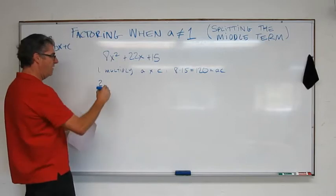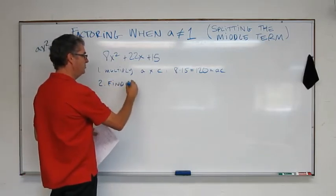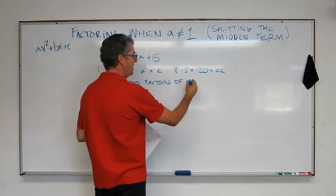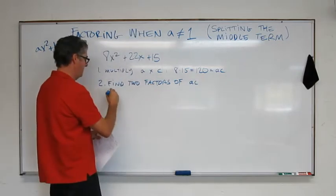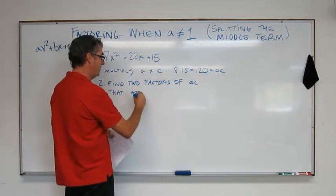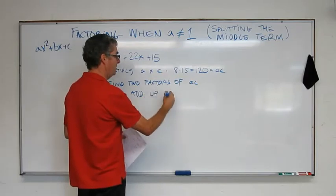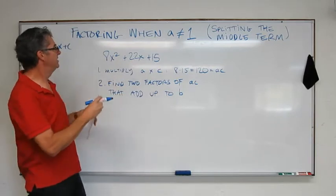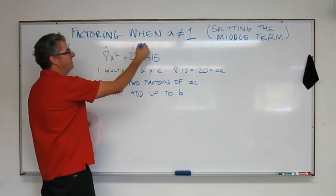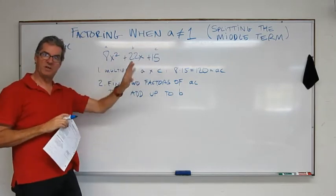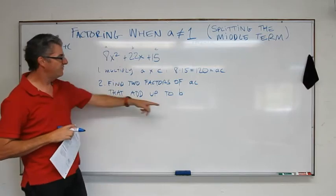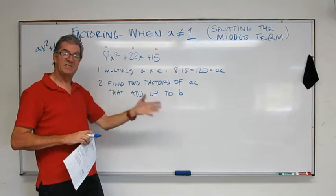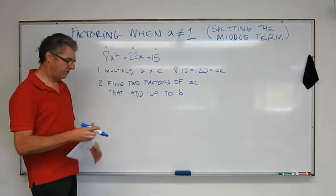Step 2 is find two factors of ac that add up to b. Okay, so remember, b is this number here. Let's just put these up here, a, b, and c. That's not a bad step if you confuse these. Okay, so find two factors of ac of 120 that also add up to b. So this is kind of like a product sum type question. So I'm going to show you those.